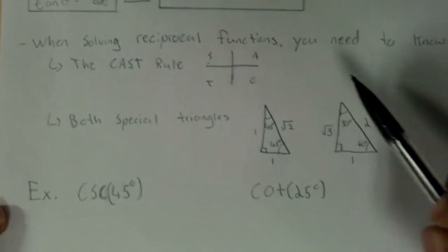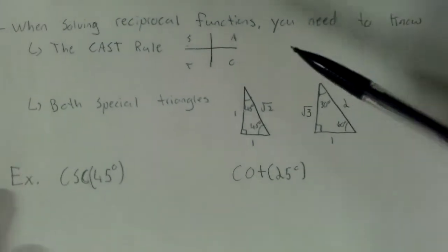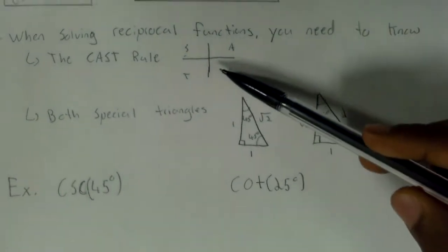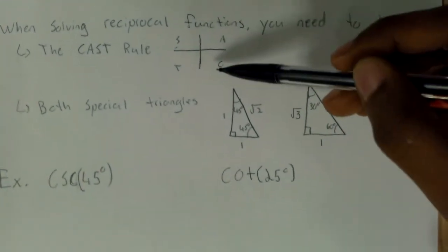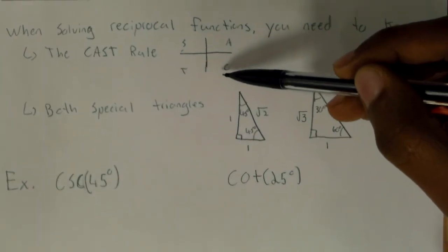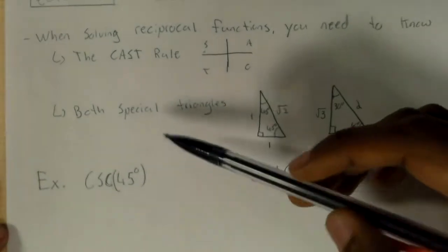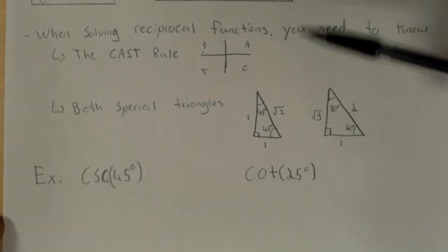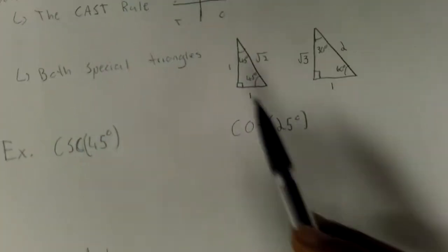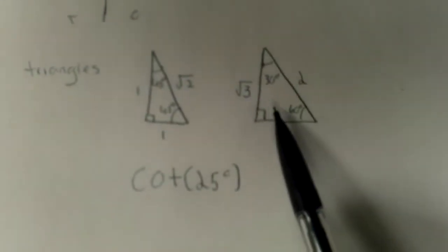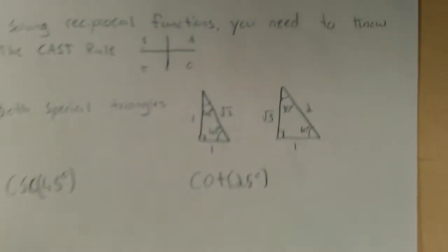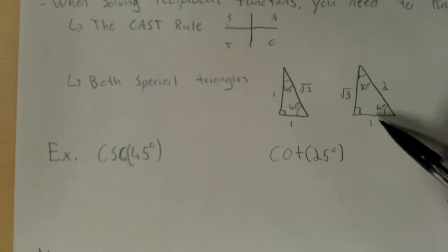When you're solving for reciprocal functions, you need to know two things. The first is the CAST rule to see if the angle or the ratio will be positive or negative. And the second is the two special triangles, which are right here: the 45-45-90 and the 30-60-90. And that is to find exact values.